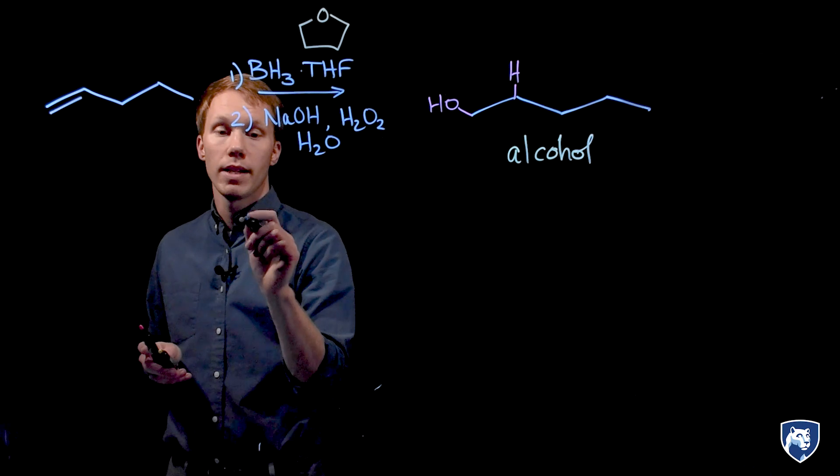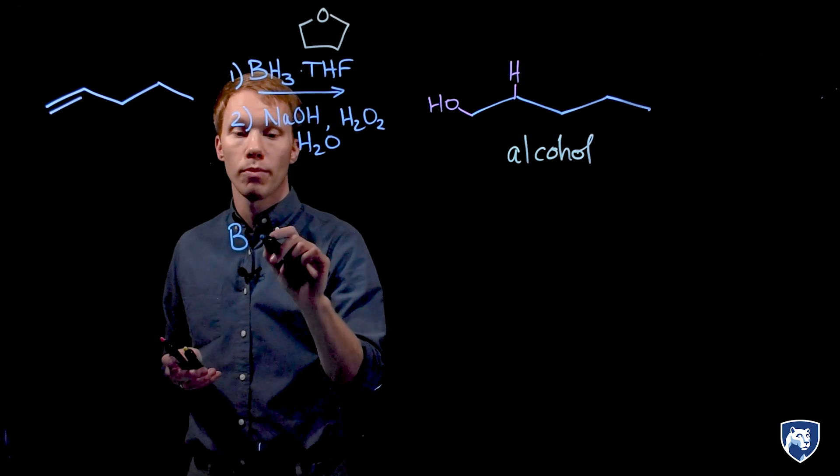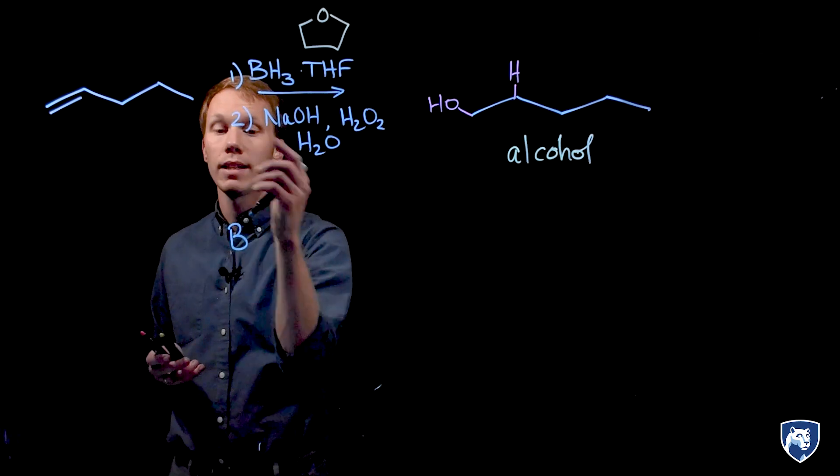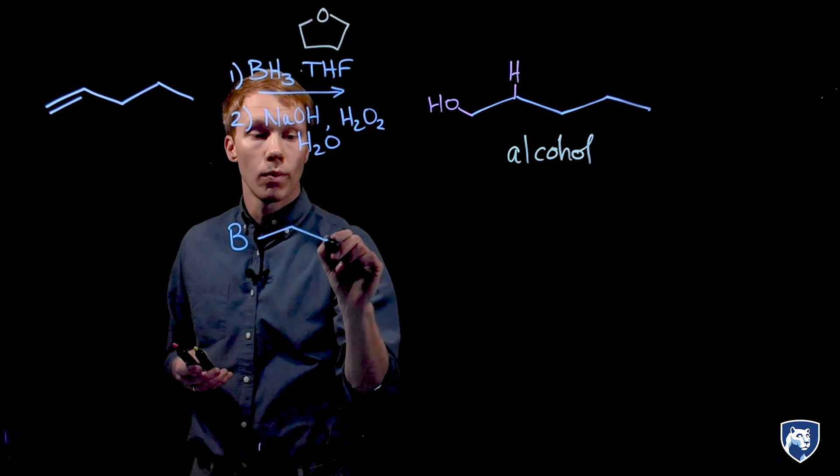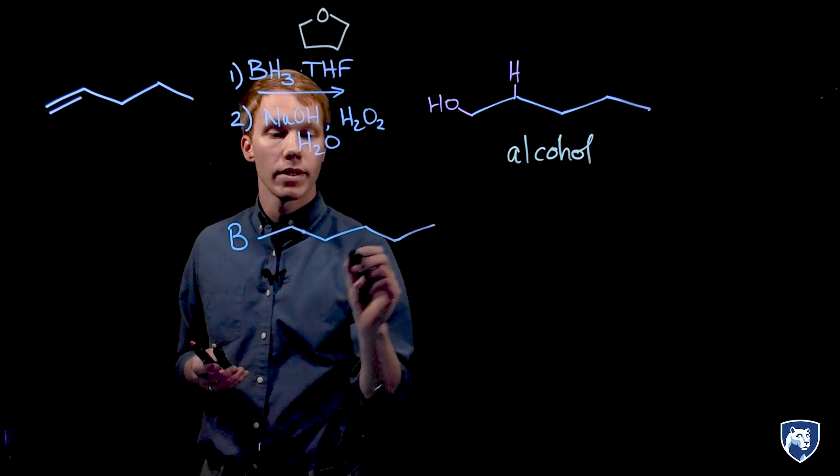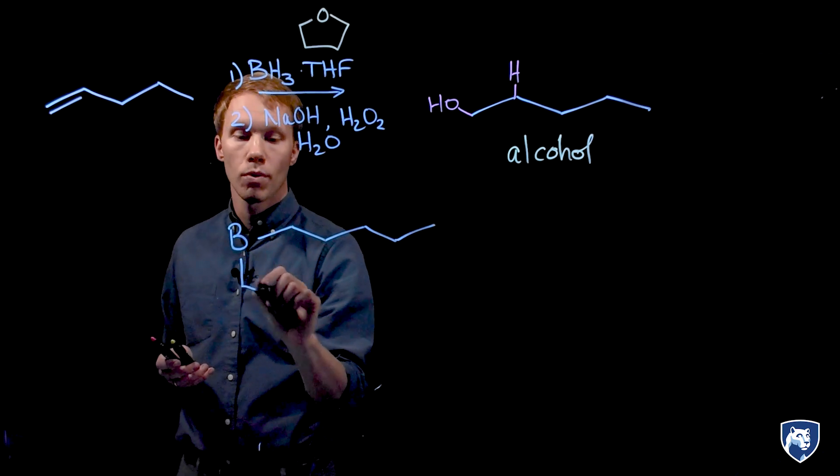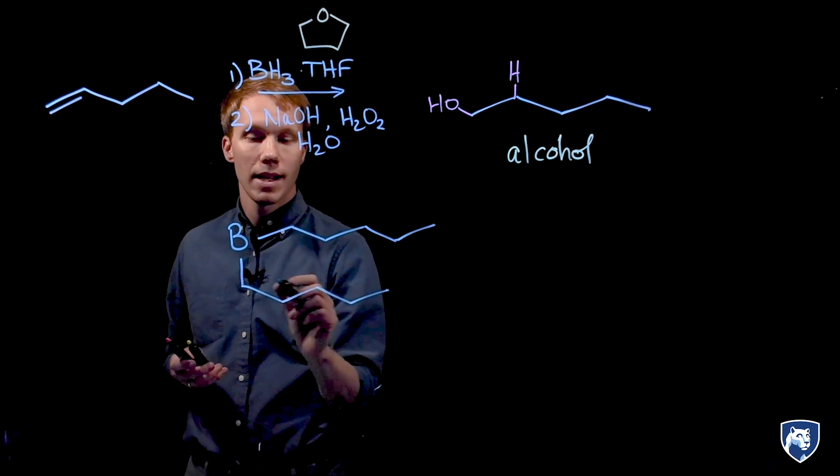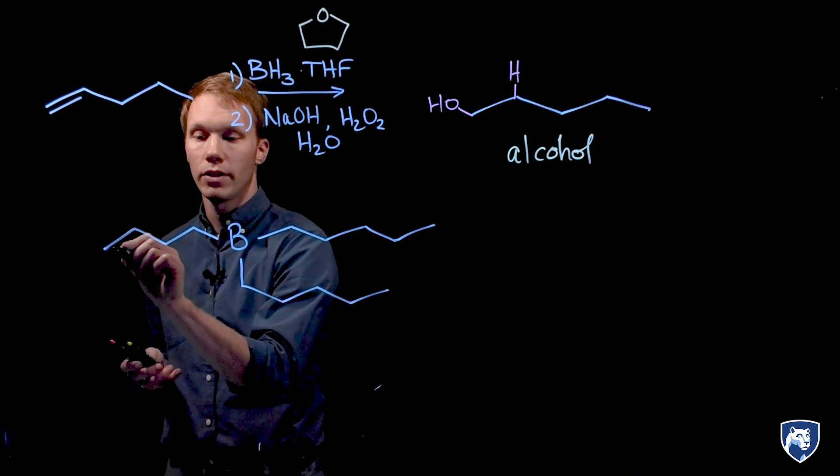The product of our first step is a trialkyl borane. This alkene bonds with boron. So we'll have this five carbon chain attached to boron three times as the name implies trialkyl borane.